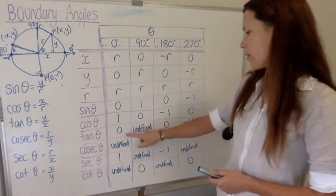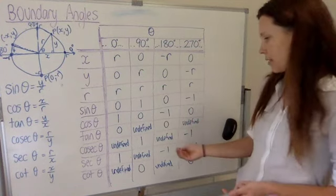Tan of theta: zero, undefined, zero, undefined, zero, undefined. That's a pattern.